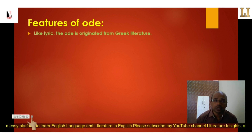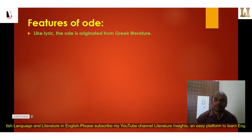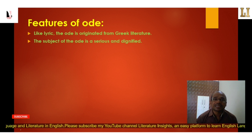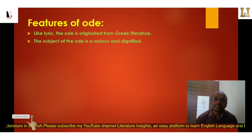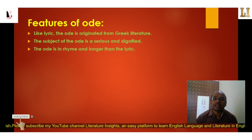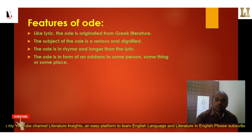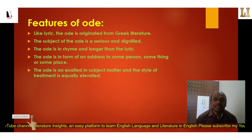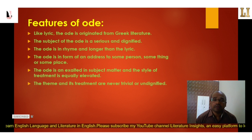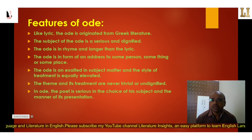Now let's look at the features of the ode. Like the lyric, the ode originated from Greek literature, and the etymology of both forms shares the same existence. The subject of the ode is serious and dignified. The ode is written in rhyme and is longer than the lyric. It takes the form of an address to some person, something, or some place. The ode is exalted in subject matter and the style of treatment is equally elevated.